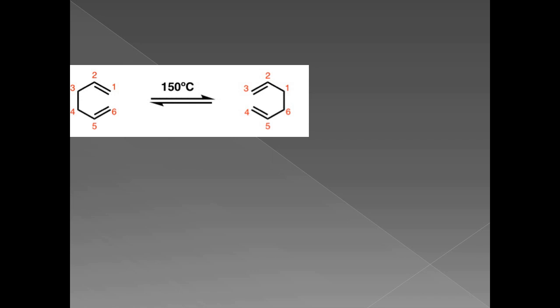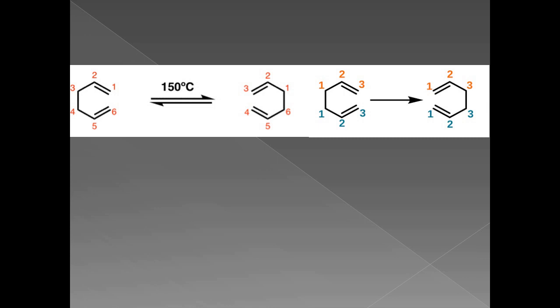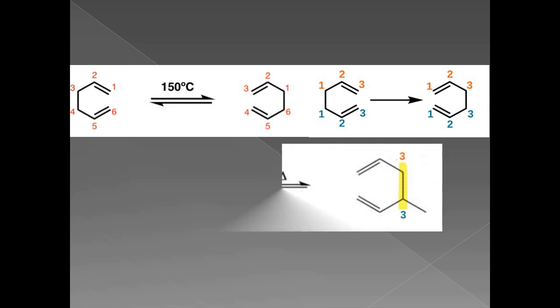Now let us look at one more example. In this example there is a compound containing six carbon atoms with two double bonds. After heating to 150 degrees centigrade, a product is obtained. The single bond between the third and fourth carbons shifts to between the first and sixth carbon in the product. In this case the transferring sigma bond is present within the compound, not at the terminal position. Therefore we number it as 1,2,3 and 1,2,3 on each side. It is clear that the carbon-carbon single bond between first and first carbon shifts to the third and third carbon position.